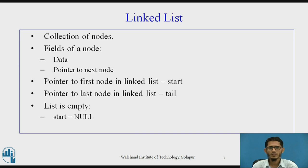Let us first see what is a linked list. A linked list is actually a collection of nodes. A node has two types of fields: one field is a data field that consists of the data to be stored, and the second field is a pointer to the next node in the linked list.